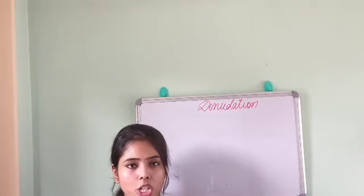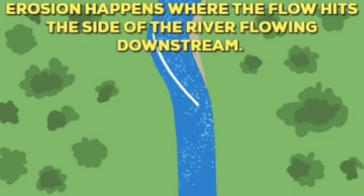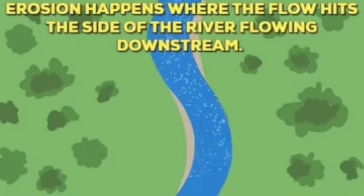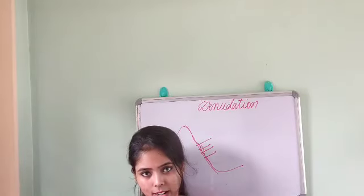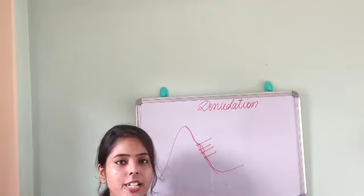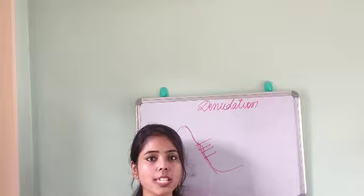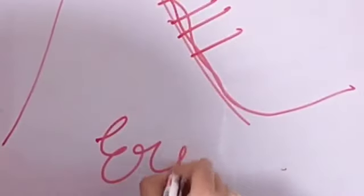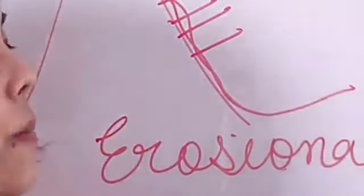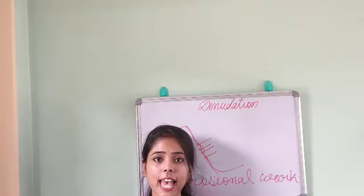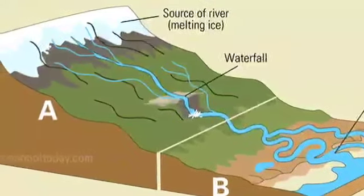Now let's look at the major landforms created through the erosional work of a river. Erosion means the river is eroding material away from the landform. As the river flows through the mountain slope, it erodes materials from the slope, and afterwards those materials are deposited by the river. In the upper course, the river primarily does erosional work, and many structures on the Earth's surface have been created by rivers.